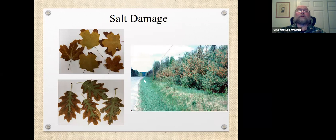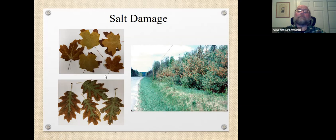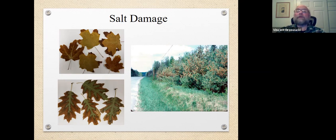We'll cover some of the other problems — salt damage. We did see a lot of this on our trees after summer storms, especially storms that track in over the ocean and pick up salt in the mist. Salt is a dehydrator, so it causes scorching on the leaves. White pines are very susceptible to salt damage — this could be either salt from storms or salt from road salt being kicked up and blown onto the white pines.